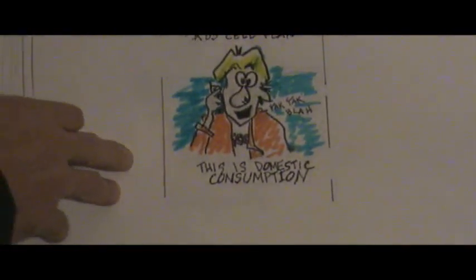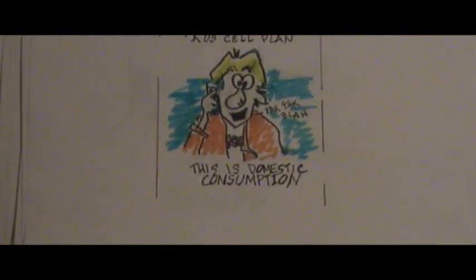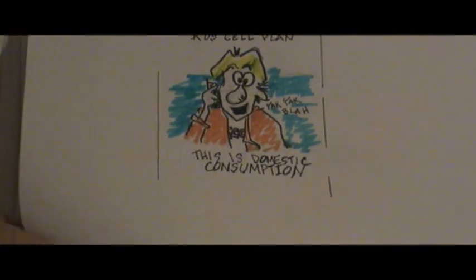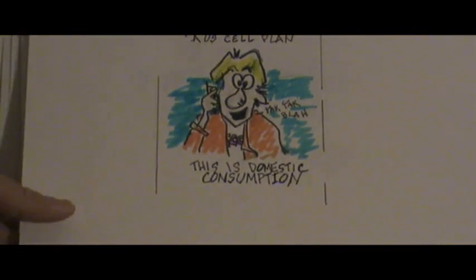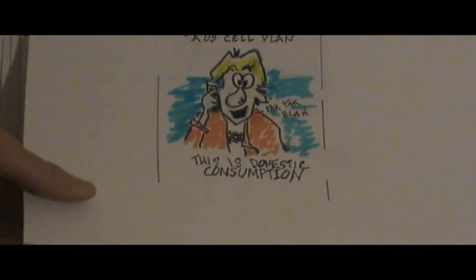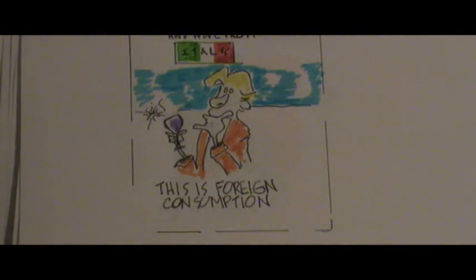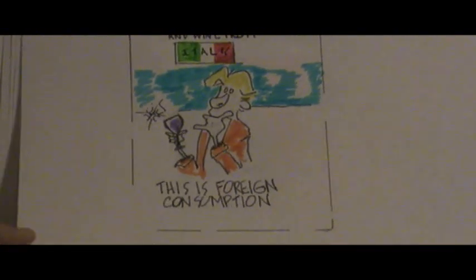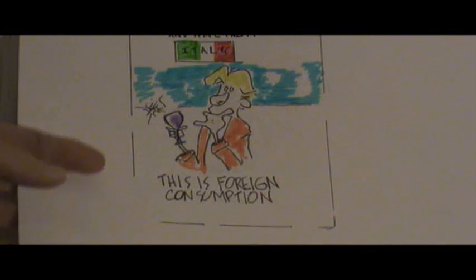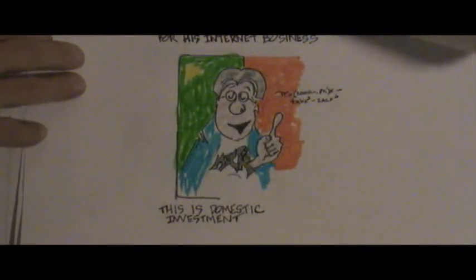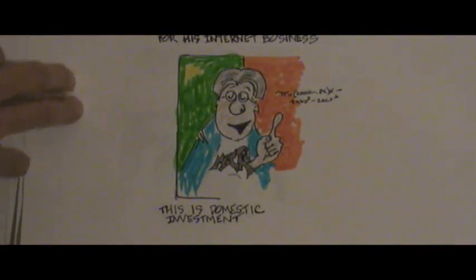Say that Jeremy buys a cell phone plan from US Cell — this is considered to be domestic consumption. And Jeremy buys wine that is imported from Italy — well, this would be foreign consumption.